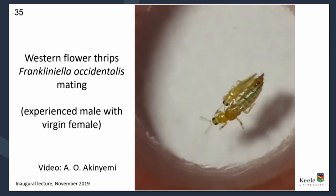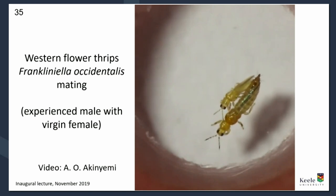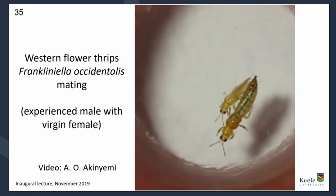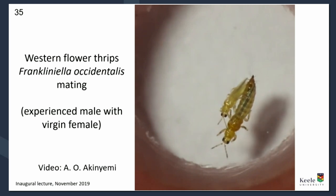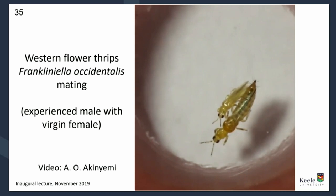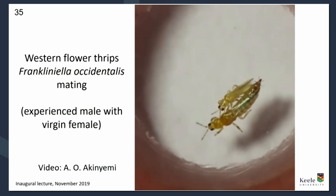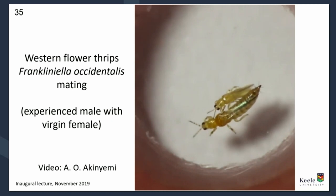Not all thrips behave quite like this. In another case we have an experienced male — old, having mated before — encountering a virgin female. Let's contrast this with another species: the bean flower thrips, Megalurothrips sjostedti, on which we have a project in Kenya. When this one mates, it's a rather different story — more like an all-in wrestling match. The ball of action between male and female, then they part, come back together again, and suddenly the male has started copulating. We're working on this and don't fully understand what's happening.